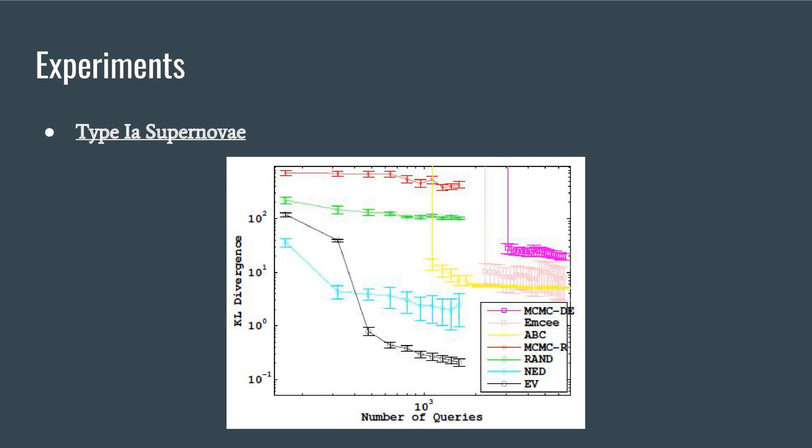Supernova data is used for inference on three cosmological parameters: Hubble constant, dark matter fraction, and dark energy fraction. The KL for RAND decreases slowly as it accumulates points at high likelihood regions very slowly. MCMC-R performs poorly since it has only explored part of the high likelihood region. For NED/EV after an initial exploration phase, the error shoots down.